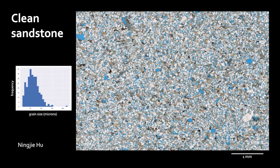If you look at these turbidites under the microscope, we can see that these are quartz and feldspar-rich sands with a low mud content. There's quite a bit of porosity, which shows up in this image as blue epoxy. In terms of grain size, we tend to call these rocks sandstones, but note that about half of the grains in this thin section consist of silt. If we look at that histogram, half of it is essentially silt.